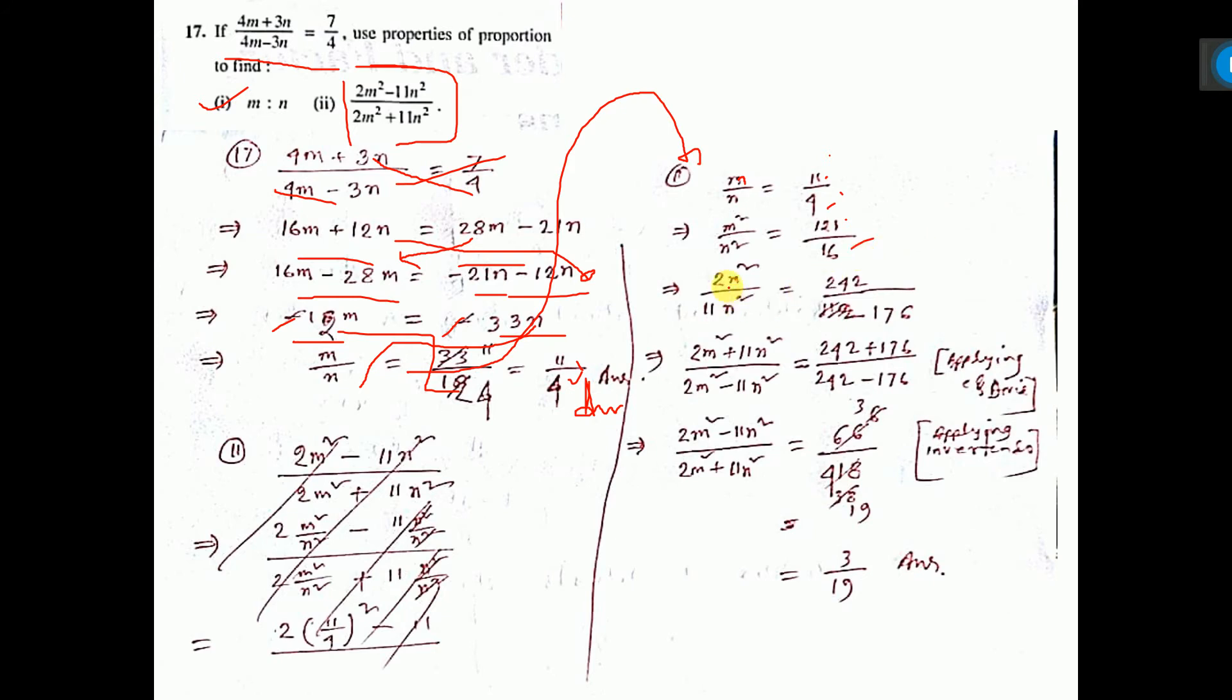Now if you multiply by 2 by 11 both sides, 2 by 11, so 2 into this is this, and 11 into 16 is this. Now here you apply componendo and dividendo.